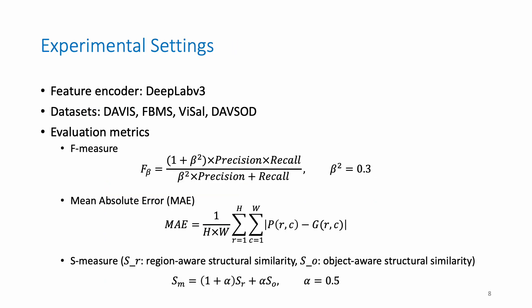In this work, we use DeepLab V3 as the feature encoder, and we conduct experiments on the DAVIS, FBMS, ViSal, and DAVSOD datasets. For the evaluation metrics, we adopt F-measure, MAE, and S-measure.